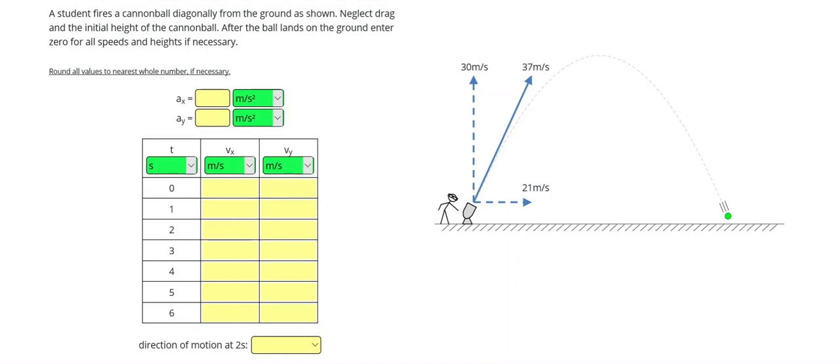In this problem, we're going to make a motion chart for a projectile that moves both up and down and left and right. Let's start off by defining x as horizontal. So that's any motion left and right. And y describes the vertical motion. That's any motion up and down.